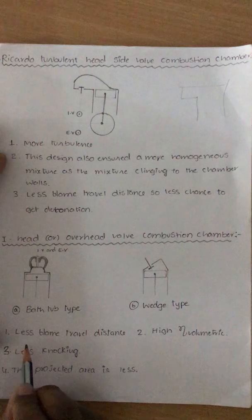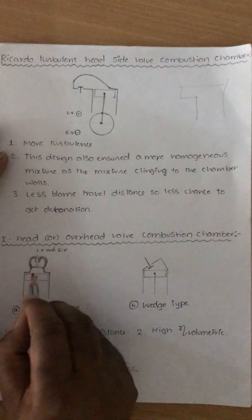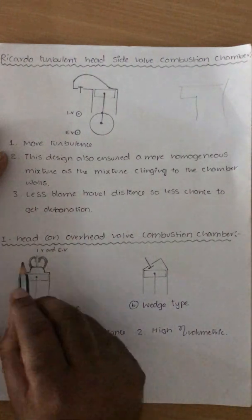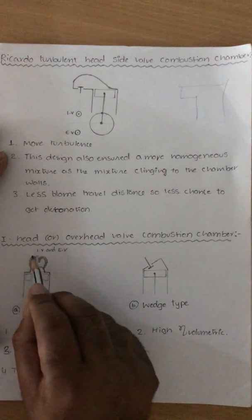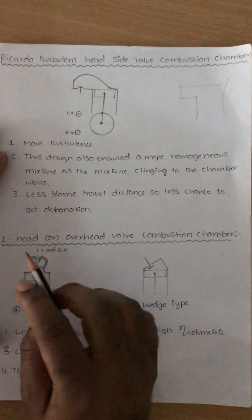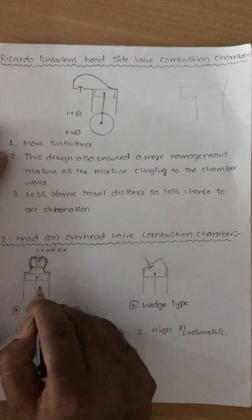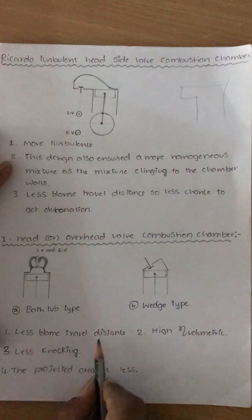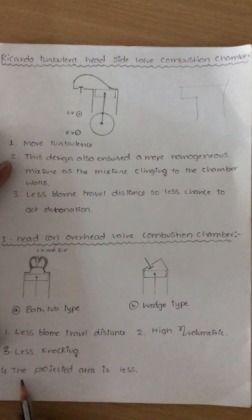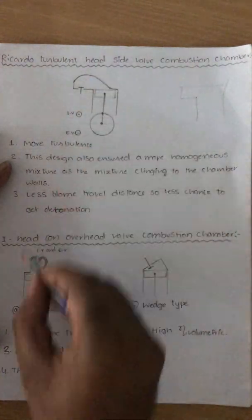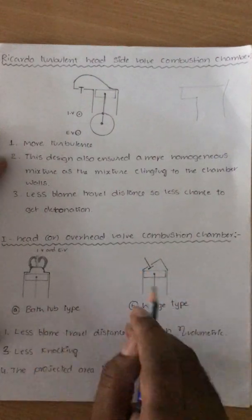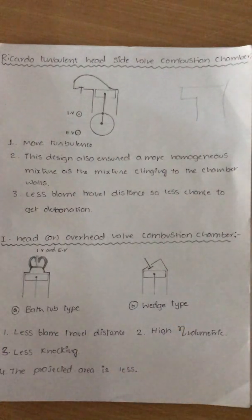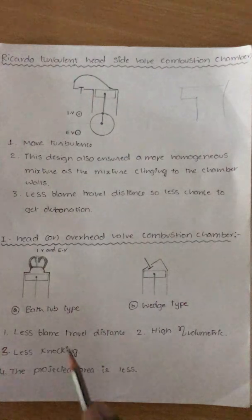The advantages of the I-head combustion chamber are: first, less flame travel distance — the flame travel distance is very, very less. Second, high volumetric efficiency, because the inlet valve has a larger diameter and is placed directly at the top of the piston, so whenever the piston moves downward more suction happens and more air-fuel mixture enters. Third, less knocking — as flame travel distance reduces, knocking reduces automatically. The projected area is also less. This is the best technique to reduce knocking, reduce flame travel distance, and increase volumetric efficiency.